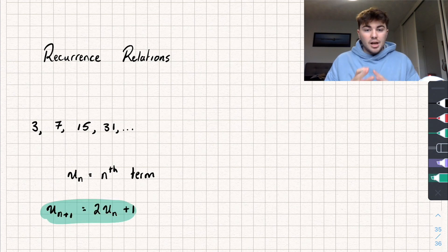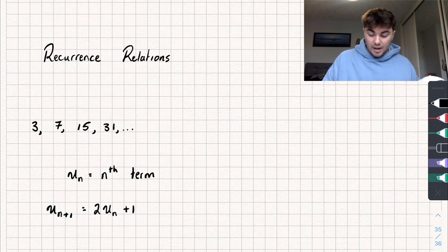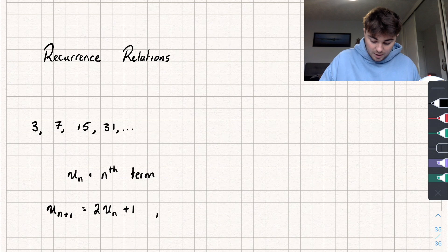And this here isn't enough to define or to give the sequence. The reason for that is we need to be given an initial term to plug in, an initial value. So then we just finally need to say u_1 equals three in the example above.